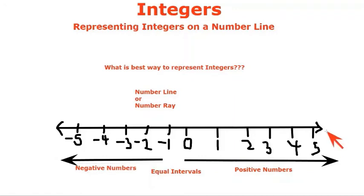This arrow tells us that there are infinite positive numbers towards the right, and this arrow tells us that there are infinite negative numbers to the left.